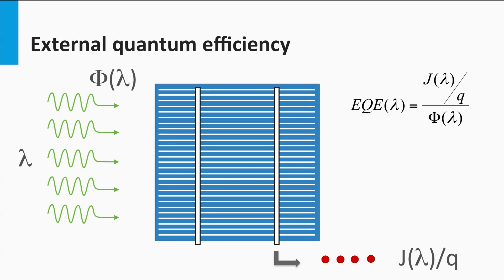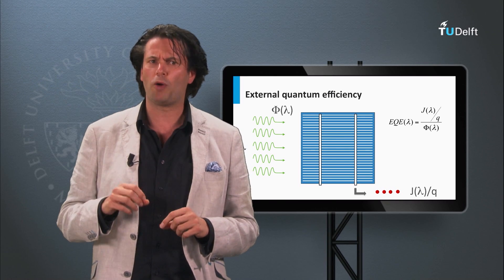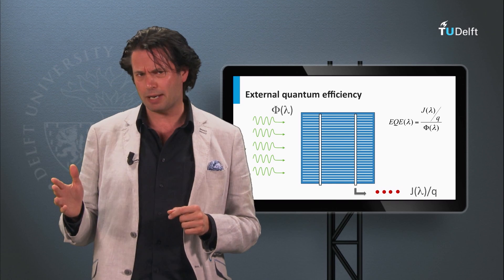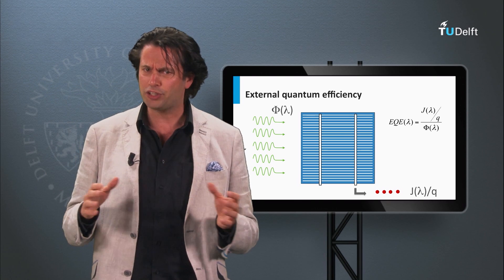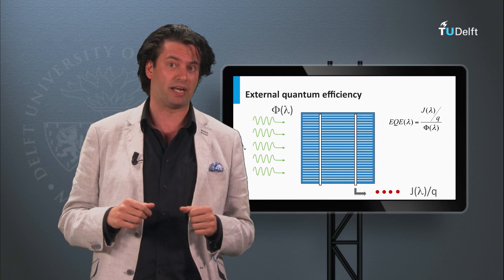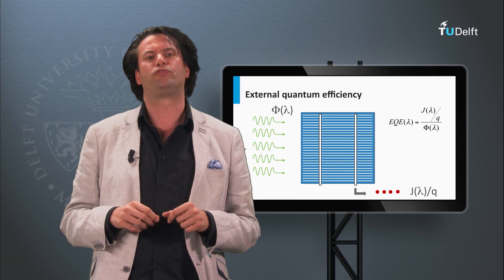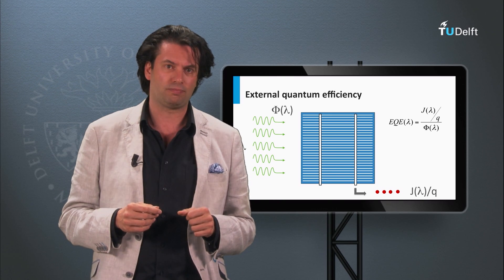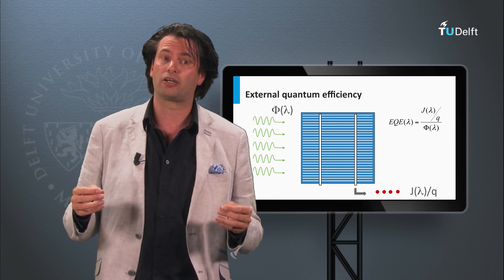Not every photon incident on the solar cell will result in electrons collected at the contacts. Lower EQE can be attributed to several optical and electrical loss mechanisms. For example, photons can be reflected back from the solar cell, photons are not absorbed as they have energy smaller than the bandgap, the absorber layer is too thin and does not absorb all photons, there are parasitic absorption losses in the inactive PV layers of the cell, and recombination of the light-excited charge carriers before they are collected at the contacts.